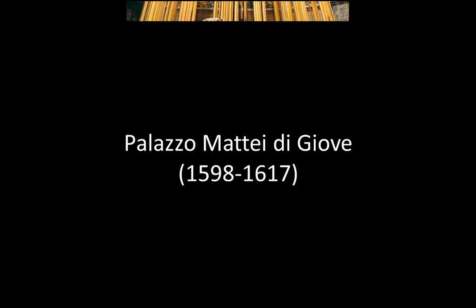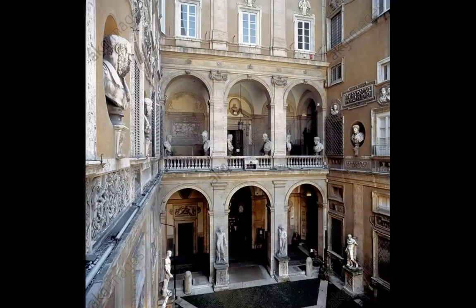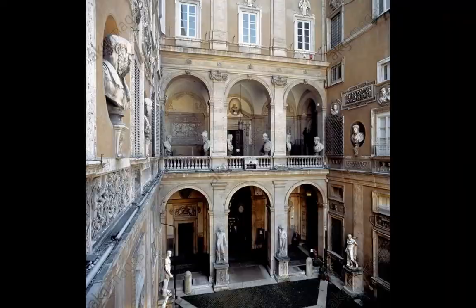Palazzo Mattei di Giove, 1598–1617. A palace, a secular work. But as you can see, even if it was a secular work, beauty was of high concern — statues, decorations and so on — all contributing to this quest for beauty, even though if we are to define it, it's not so easy.